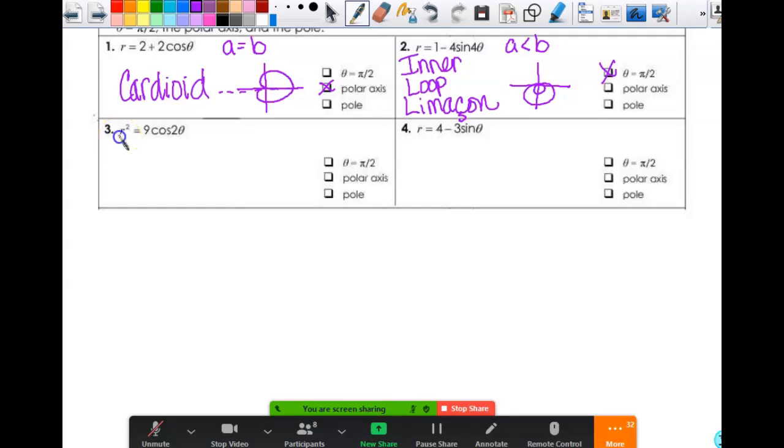All right, number three. We've got an R squared. That throws this immediately to the lemniscates. And A is three here, but it really makes no difference because I'm not actually plotting points. But it's a lemniscate. It's like a two-petal rose. It's a cosine function, so the first one is on the x-axis, so it would look something like that. So what is that symmetric to? The polar axis. Anything else? Theta equals pi halves. Anything else? Can I rotate it 180 degrees and it looks the same? Yep, it's symmetric to the pole also. It has all three types of symmetry.